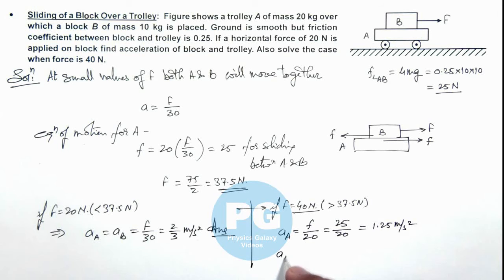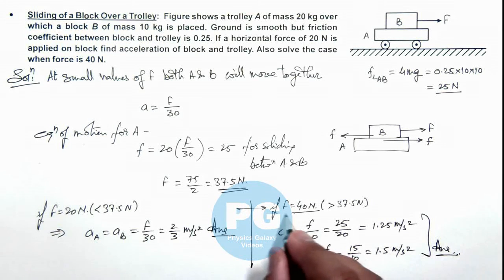And acceleration of block B we can give as F minus friction divided by its mass that is 10. The value of F is 40 and friction here is 25, so this will be 15 by 10 that is 1.5 meter per second square. So these are the results of the problem when external applied force is 40 newton.